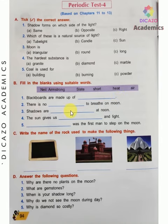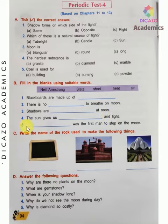Shadows are short at noon. The Sun gives us heat and light. Who was the first man to step on the moon? That is Neil Armstrong.